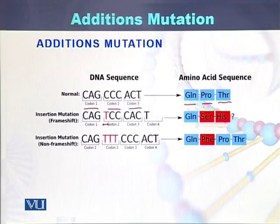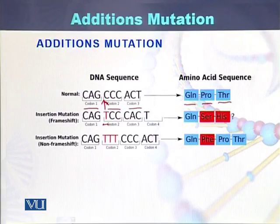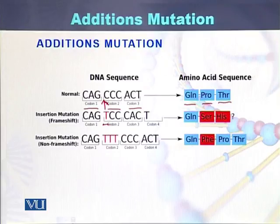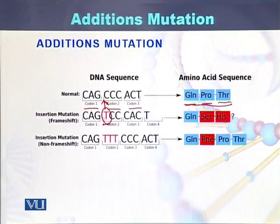if we do the comparison, this T is actually added between this G and C. So at this point, this T has been added, which is called an addition mutation. As a result, the sequence of the amino acid will be changed due to the addition of this nucleotide. Originally the nucleotides were producing this amino acid sequence, but due to the addition of thymine or T, the sequence of the amino acids has been changed. This is the example of addition of one nucleotide.